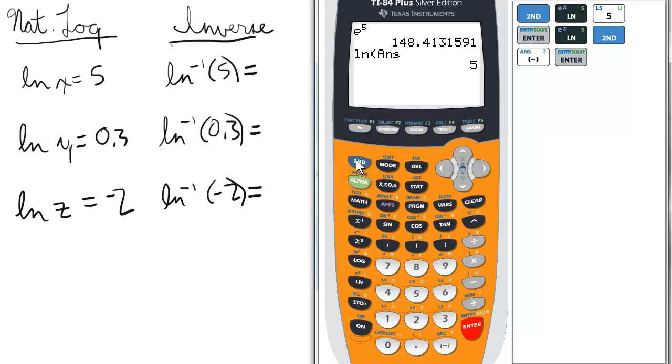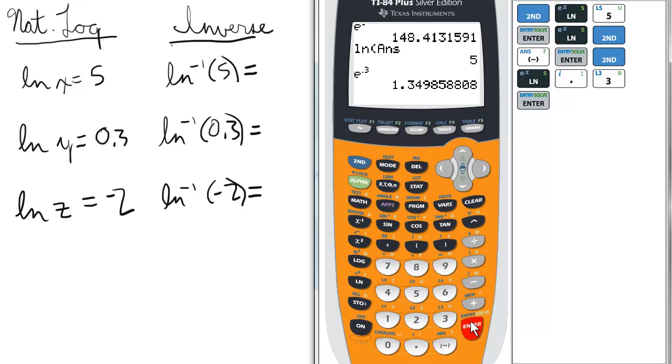So, to access the inverse natural log, press 2nd, ln, type in 0.3. And that will be our value for y in the example.